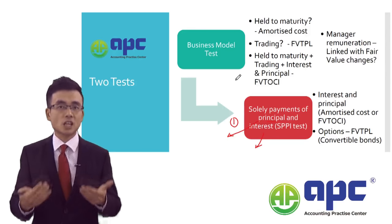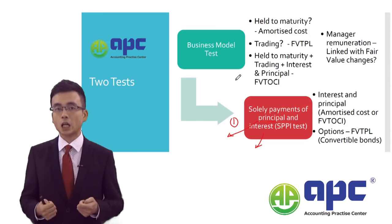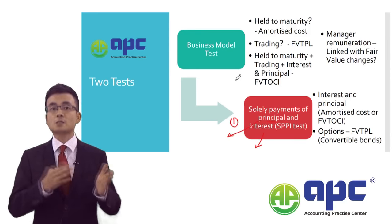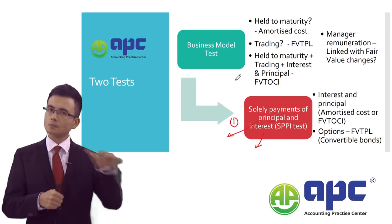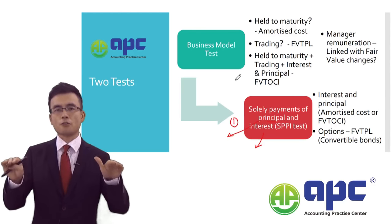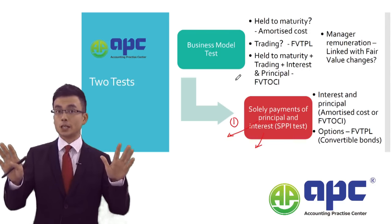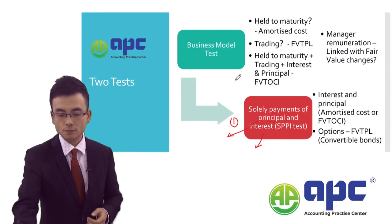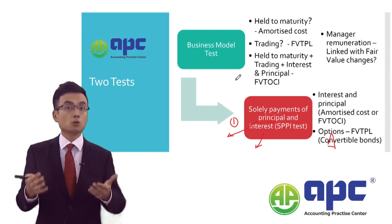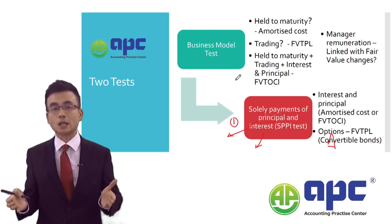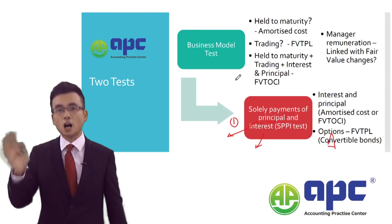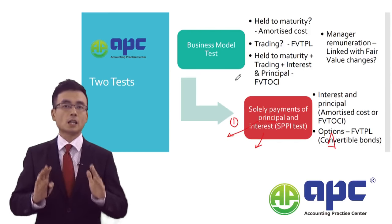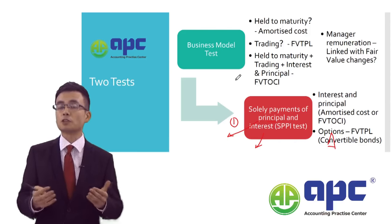The SPPI test is essentially to test your cash flows — whether or not they reflect the time value of money. If the answer is yes, I can classify the investment in debt using either the amortized cost or fair value through OCI (other comprehensive income) methods. If the answer is no — for example, you are buying a convertible bond with an option to convert into shares at some point in the future — the cash flow will include other bits and pieces beyond time value of money, and you must classify it as fair value through P&L.